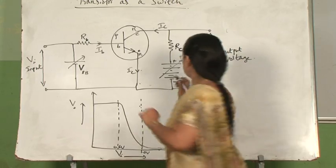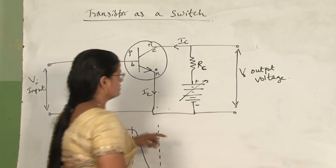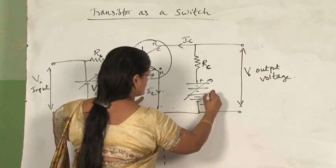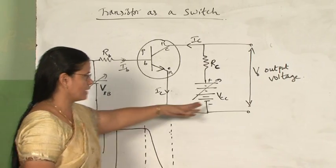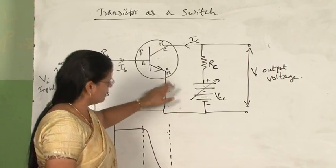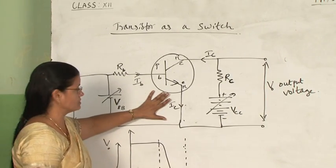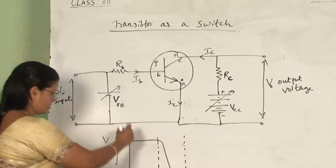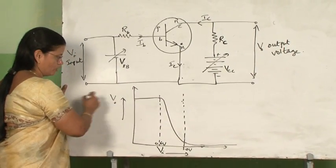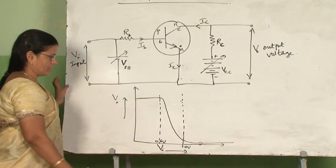Always keep this in mind. The output is taken across this position and written as VCC because it is connected to the collector — you can also write it as VCE since it is connected between the collector and emitter. So it is a common emitter configuration NPN transistor. Now let's look at the graph drawn between input voltage and output voltage.